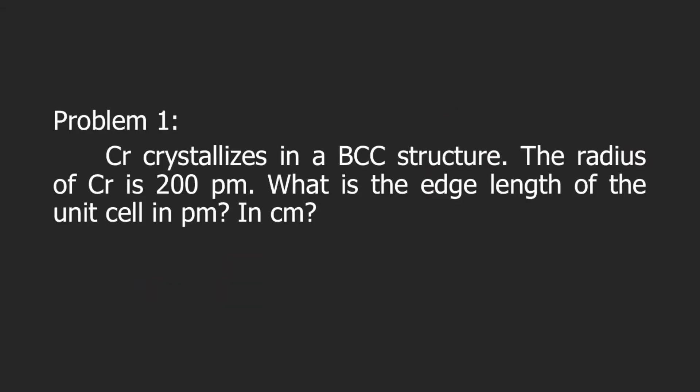So let's try to use the formula by answering problem 1. Chromium crystallizes in a BCC structure. The radius of chromium is 200 picometers. What is the edge length of the unit cell in picometers and in centimeters?